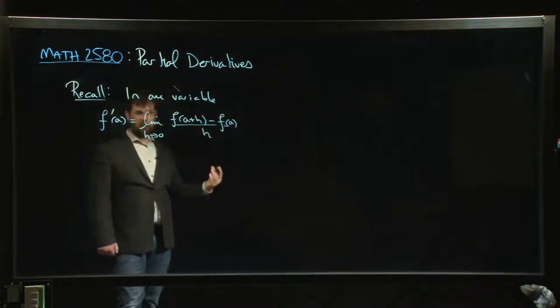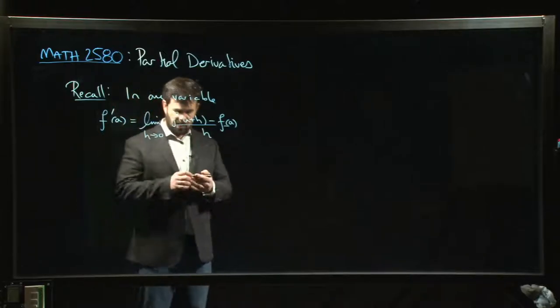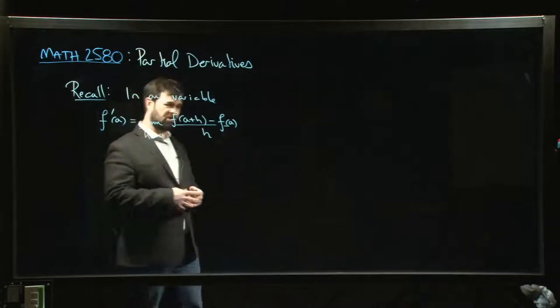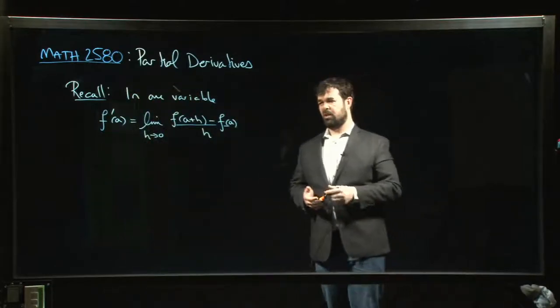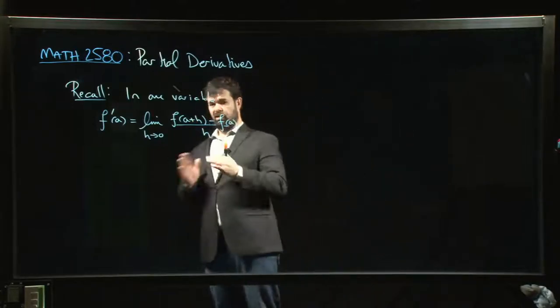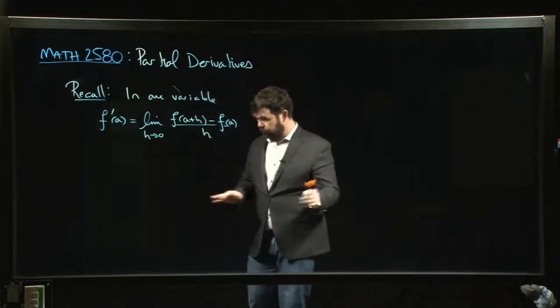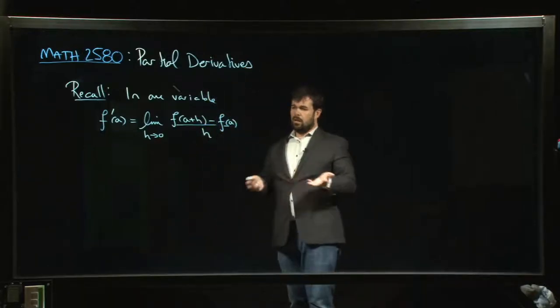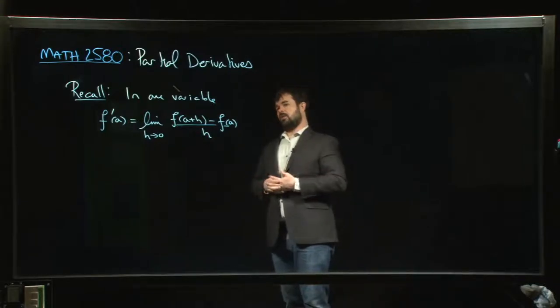Limit as h goes to 0, f of a plus h minus f of a over h. And we say if you can evaluate this limit, if the limit exists, you get a number and that number is the derivative. And of course you have this nice interpretation that this has this meaning in terms of slope of a tangent line. We draw these pictures, we think of a and a plus h, these are nearby points, you look at the corresponding y coordinates, you draw the secant lines, this whole story.